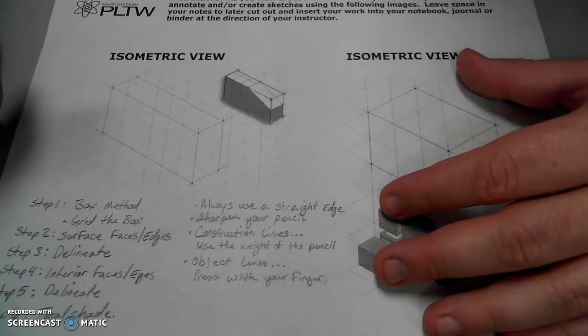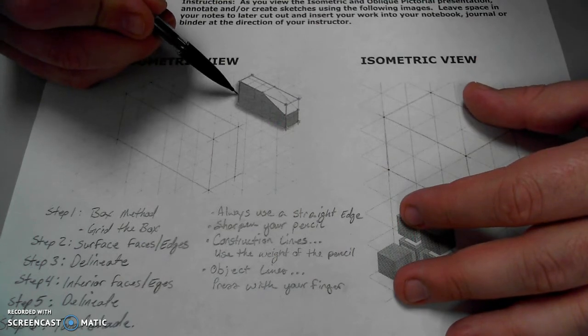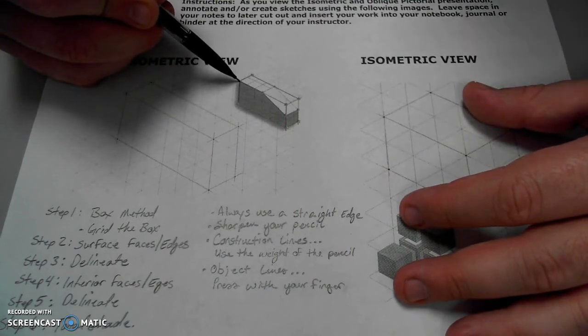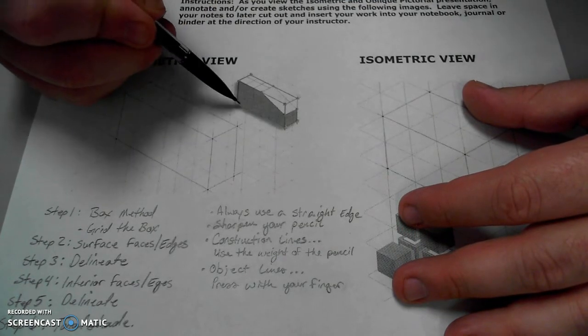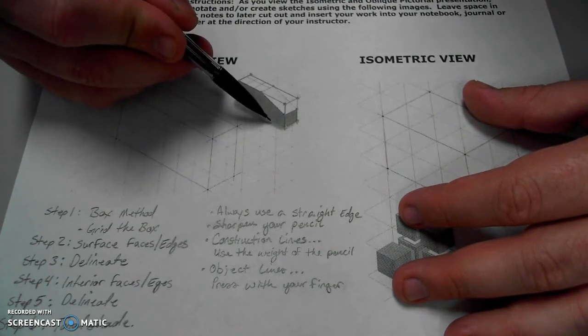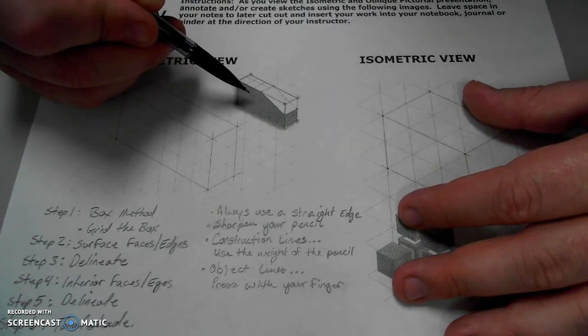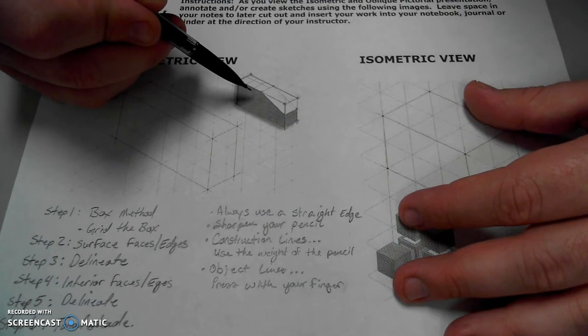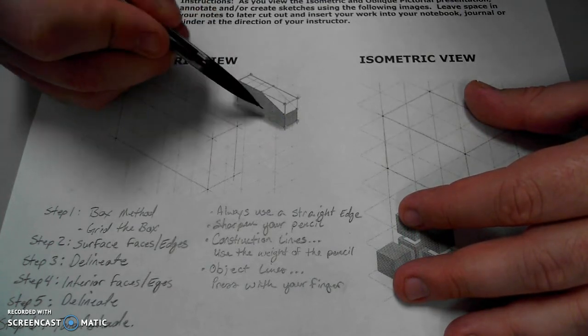Something to note about this object is that they've decided to make it three units tall by one and a half deep and six wide. We know this is the front face because it's a pretty stable position for this object. It's also a very natural position for this object, and it has the longest dimension shown.